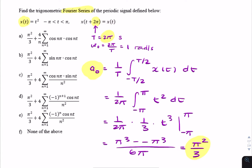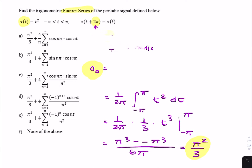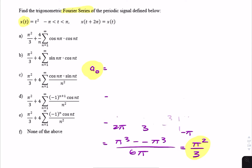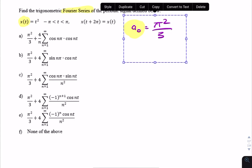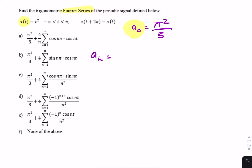Looking at the answer choices, all of them have the correct value for a₀, so we can't eliminate any answer at this point. a₀ is π² over 3 — that's our first piece of information. The next thing is to find the remaining cosine components, a_n.